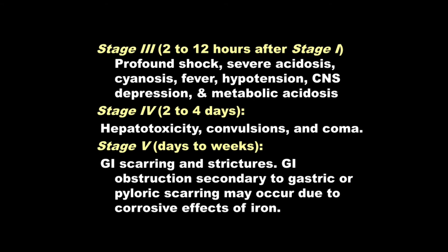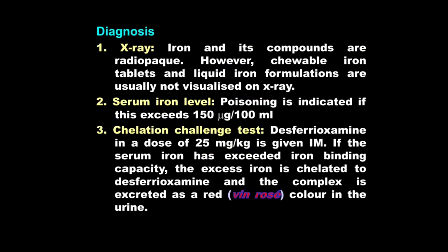If the person recovers from stage three, they move on to stage four, two to four days later. Hepatotoxicity is the hallmark of this stage and there can be hepatic failure; additional manifestations include convulsions and coma. Then comes stage five — if the patient recovers from the previous stages, this is a stage of recovery, but unfortunately there is often gastrointestinal scarring and strictures, because iron salts are mostly corrosive and can give rise to pyloric or gastric scarring, which must always be kept in mind by the treating physician.